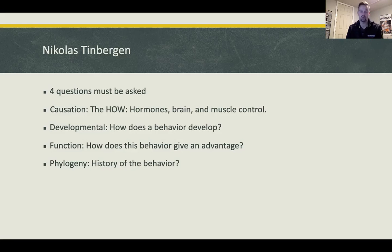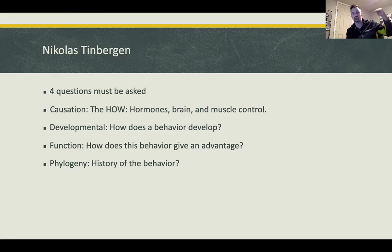The function question is how does the behavior give an advantage? For birds, their ability to fluff brighter feathers attracts more mates — the more feathers, the brighter the colors, the more they get to mate. The phylogeny question covers the history of the behavior and how it came to be through evolution.